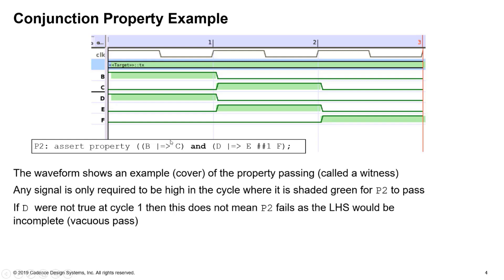If D was not true at cycle one here (by one we mean the first rising edge clock), if D was not true there that doesn't mean anything fails, as the left hand side would be incomplete, so it's vacuously passing.